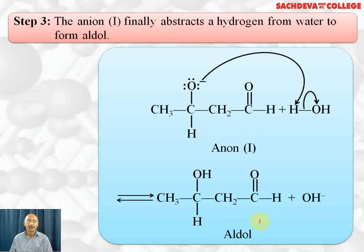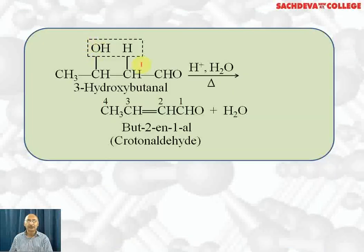Remember: you must always abstract the alpha hydrogen to generate a carbanion, which stabilizes to form the enolate ion. Do not take beta hydrogen — only alpha hydrogen is involved. Aldehydes which do not have alpha hydrogen cannot undergo this reaction. From 3-hydroxybutanal, when OH and H are lost as water, we get but-2-en-1-al.